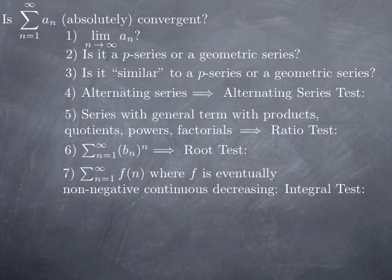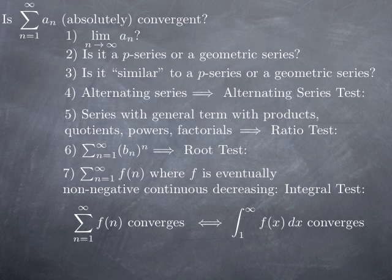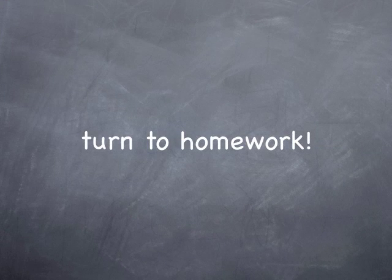Finally, if you cannot use any of these criteria, you might want to consider the integral test. If you can write your series as the sum of terms of the form f(n), where f is a real-valued function that is eventually non-negative, continuous, and decreasing, then the integral test tells us that the series is convergent if and only if the corresponding improper integral of f is convergent. That was a quick recap of all these criteria and a guide on what to consider first and in what order. You have a long list of exercises in the homework for this module — it is time to turn to that.